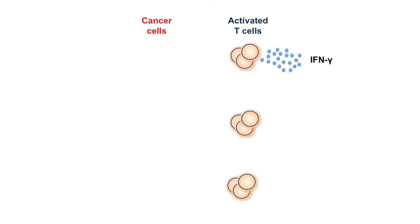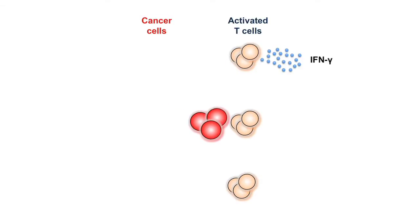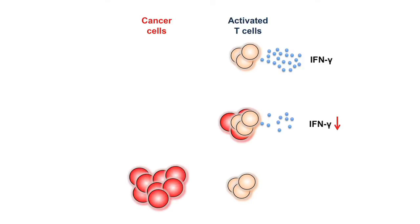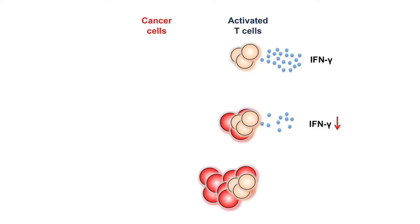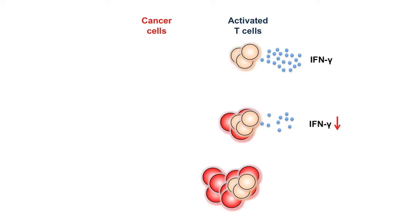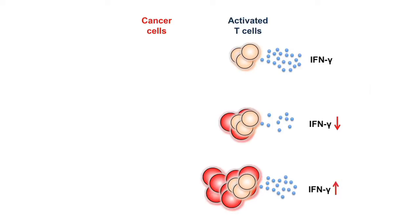We co-cultured activated T cells with tumor cells. We found that the T cells' ability to produce interferon gamma decreased, while PD-1 expression increased when cultured with tumor cells, compared to the same number of T cells alone. We also found that this decrease in interferon gamma was mediated, at least in part, by the depletion of glucose by cancer cells, because adding glucose back to the co-culture allowed T cells to produce higher levels of interferon gamma once again.